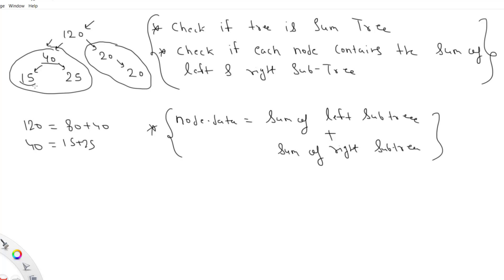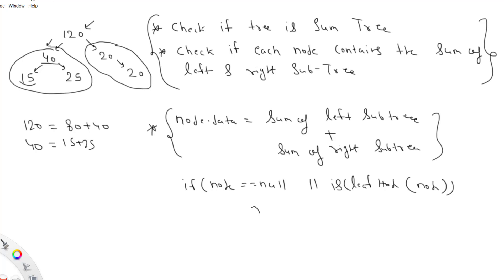When we reach a leaf node, there's nothing to check so we return true. Similarly, for a null node we also return true. These are our base conditions: if the node is null or if the node is a leaf node, return true.